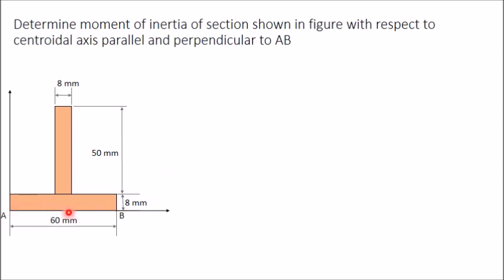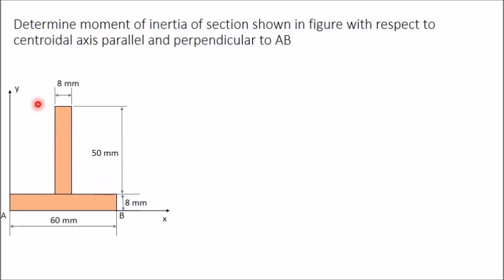We always try to draw axes passing through the bottommost part and the leftmost part of the given figure, so that the entire figure comes in the first quadrant and all distances will be positive values. We have drawn and marked the x and y axes accordingly.